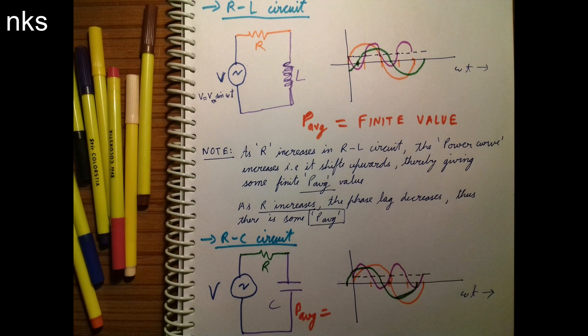So again please remember the circuit: when only purely capacitive circuit is there, the power P average is zero. But when R is added in a C, the P average is some finite value.